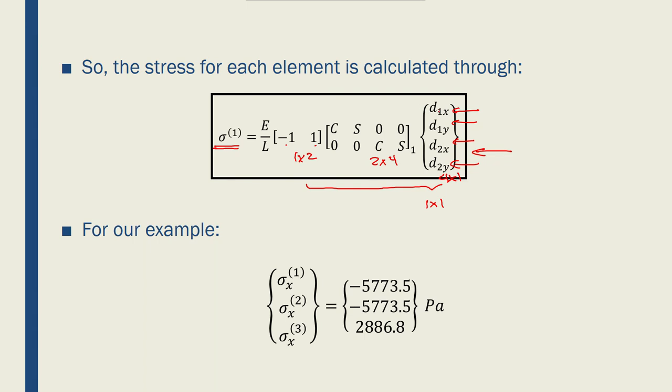Basically, let me say that again: d2x, d2y, d3x, and d3y here for the second element, and so on and so forth. And using that, I get these values for the stresses on each element of the truss structure that I showed before.